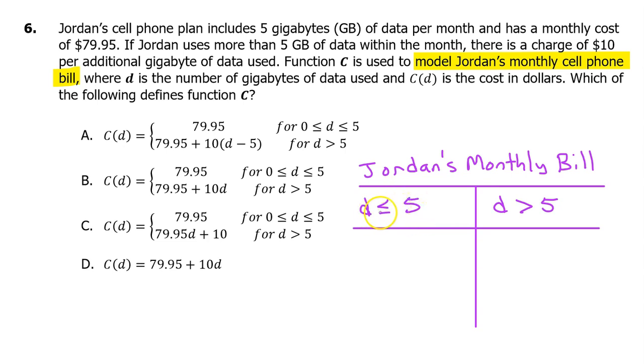Either Jordan's data usage is less than or equal to 5 gigabytes, or the data usage is greater than 5 gigabytes. The first 5 gigabytes of data are included in the flat monthly cost of $79.95. So, in this first scenario, Jordan's monthly phone service will cost $79.95. And that is exactly what is indicated by these first three options. Notice how they say that for data between 0 and 5 gigabytes, the cost is $79.95. Alright, option A, B, and C all say that. We can eliminate option D, which includes an extra charge even under this scenario.